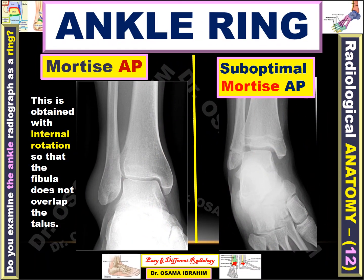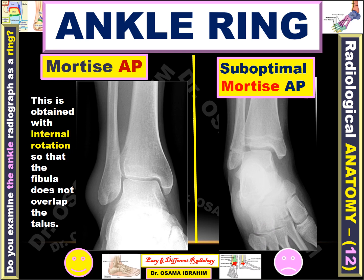This is the frontal X-ray examination of the ankle joint. One side shows the mortise or anteroposterior position, which is well-positioned, and the other side is a suboptimal or poor examination. The good position is suboptimal because — rather, the good position is when the talus bone is separated from the fibula, which occurs through internal rotation so the fibula does not overlap the talus. In the suboptimal position, the fibula and talus overlap and lesions can be missed. This suboptimal mortise AP versus the mortise AP in good positioning.